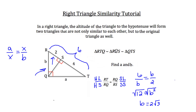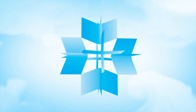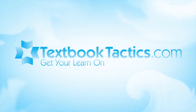Remember, A was equal to 2 root 6. That's how you use the geometric mean to solve for right triangle similarity. Thank you.